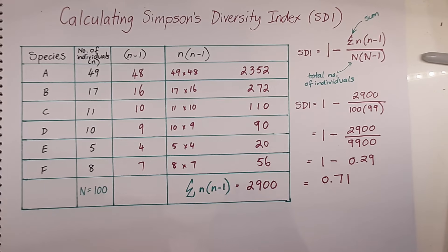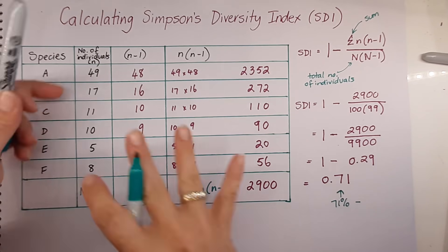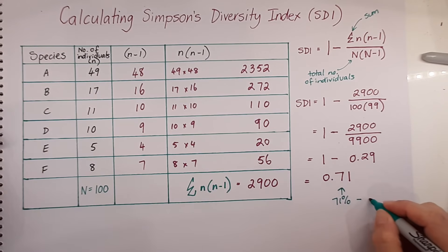So this number is quite important. We can calculate the chance that we would pick two individuals at random and if they would be the same or different species. So in this case, the SDI tells us that there is a 71% chance that two individuals selected at random from this community would be from different species.